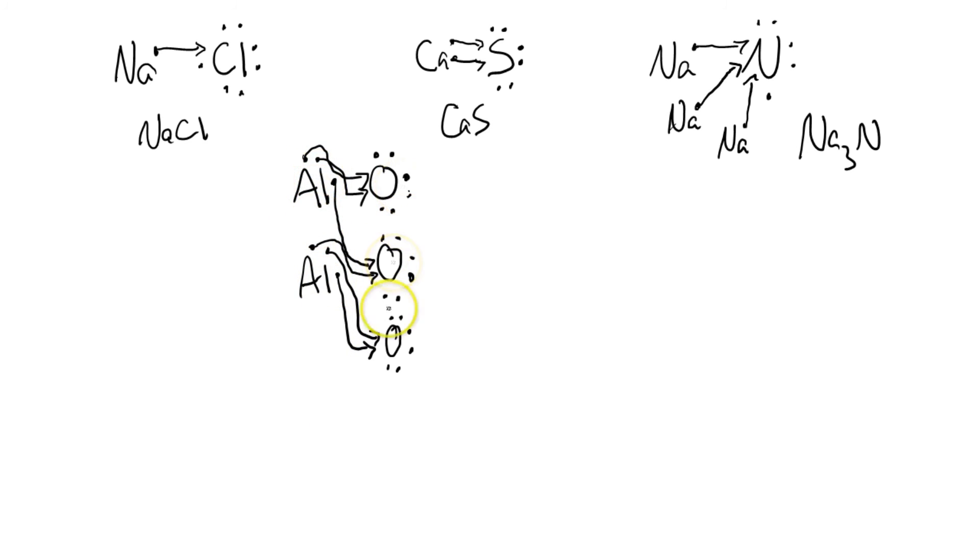And so we have 2 aluminums, 3 oxygens, and our formula is Al2O3.